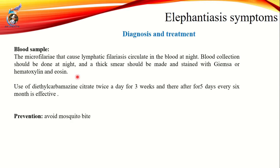Diagnosis and treatment: The microfilariae that cause lymphatic filariasis circulate in the blood at night — this is called nocturnal periodicity. During the day, microfilariae are not on the surface layer of the blood; only at night are they present. Blood is collected at night and examined using a thick blood smear to diagnose filariasis.